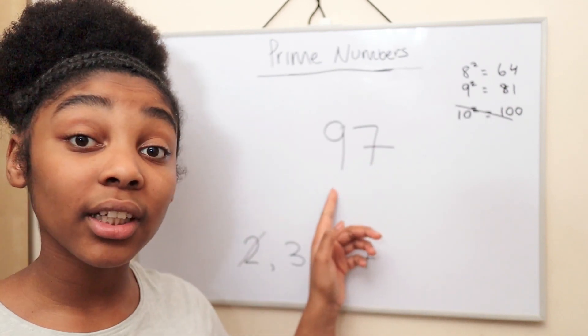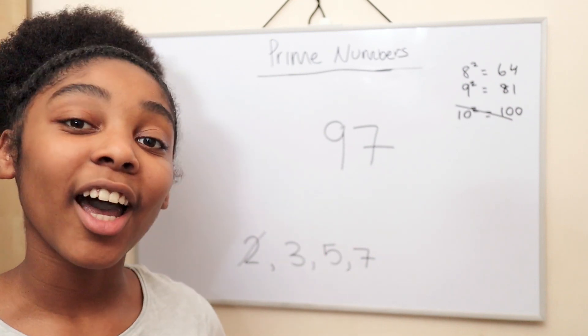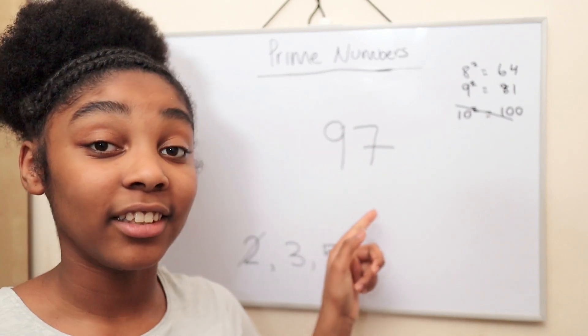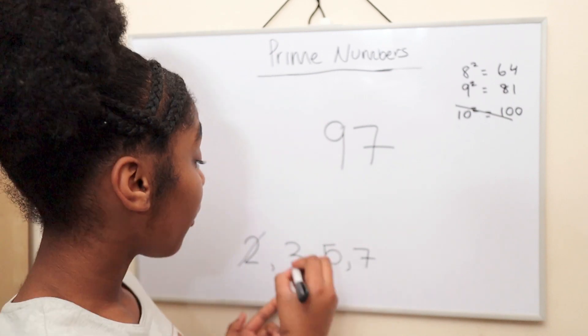Can 3 go into 97? No. Why? Well, I have a trick for that. 9 plus 7 is 16. Can 16 be divided by 3? No. So we can cross out 3.